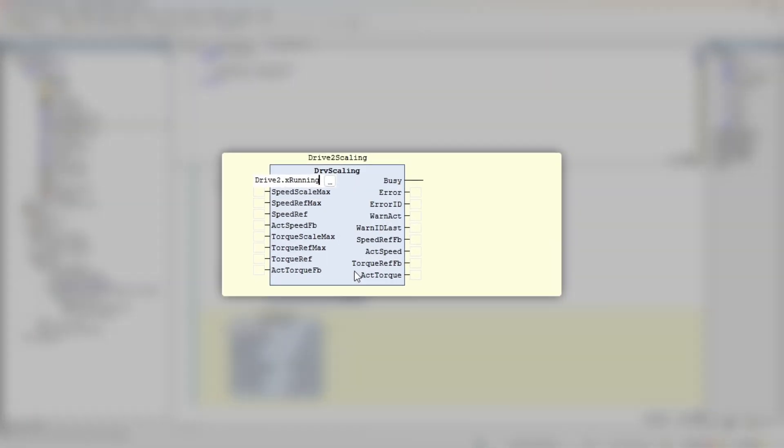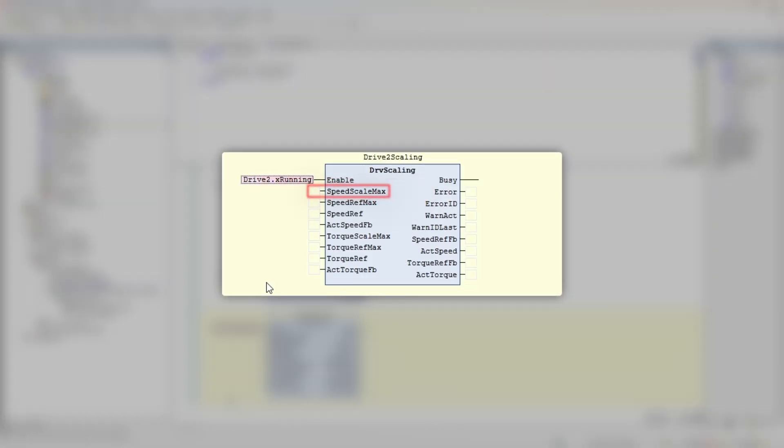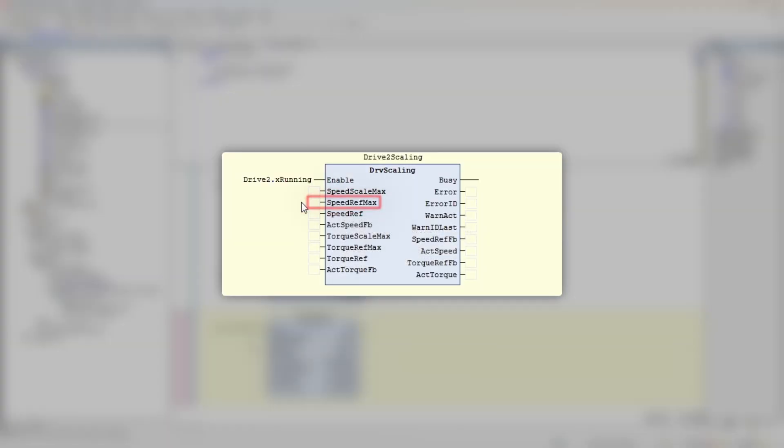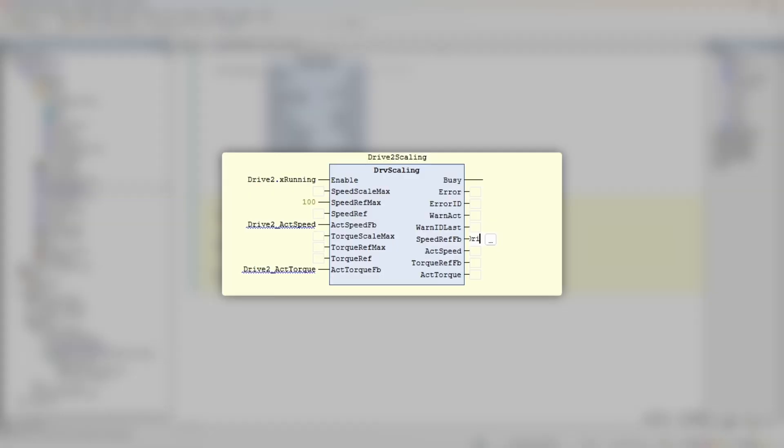And to simplify this scaling business, there is a dedicated function block in the Drives library. Input enable, the same way as above, makes logic work. Input speed scale max is a maximum scaled value—by default it's 20,000 and there's no reason to change. Input speed ref max is a maximum engineering units value. If we want to work in percentage, then 100 would be the value to put here. Input speed ref is actual speed reference from the process in engineering units. If you want to scale speed feedback from the drive, then connect actual speed value to act speed FP input. And then other remaining inputs are doing the same as above, just for torque value. Output speed ref FP goes to our speed reference variable in the drive.